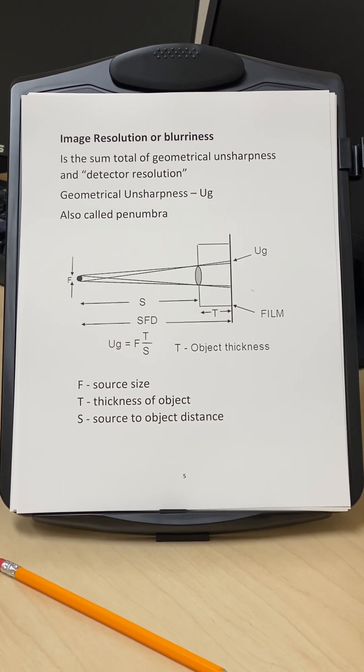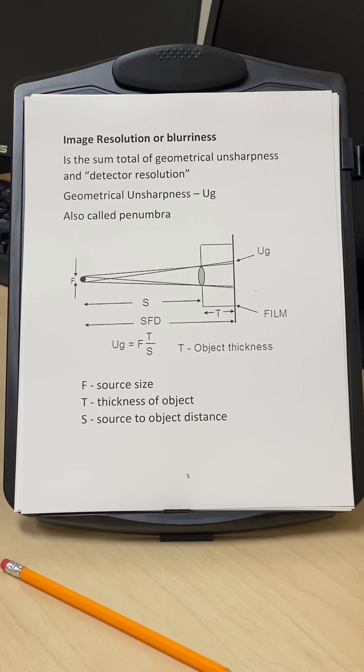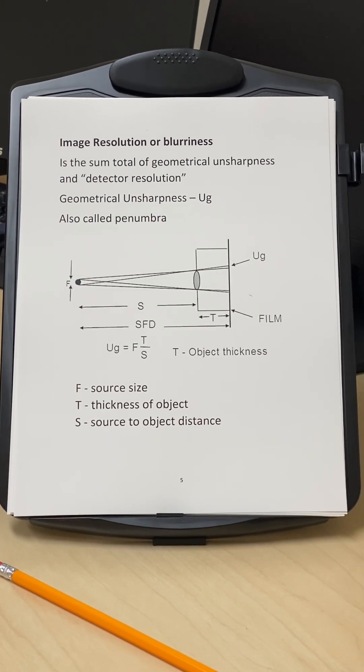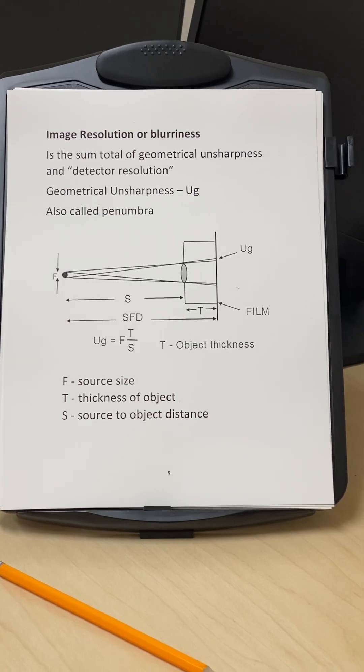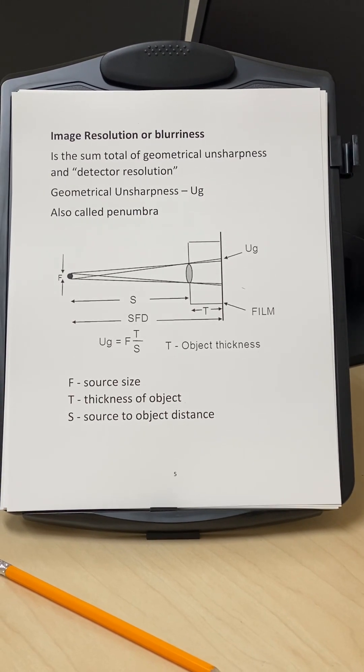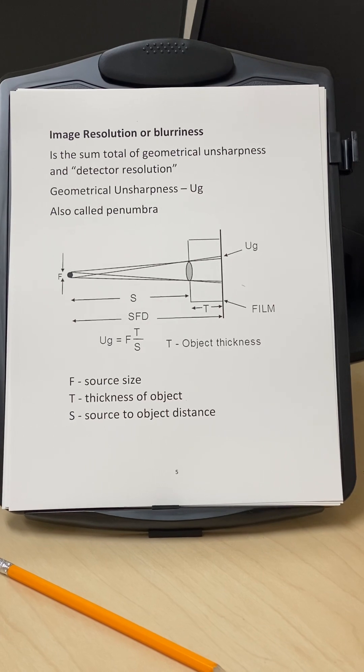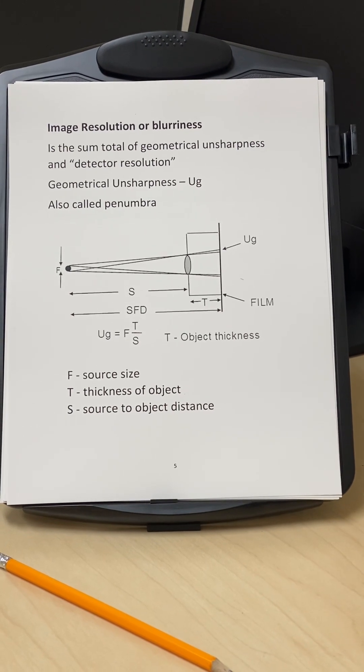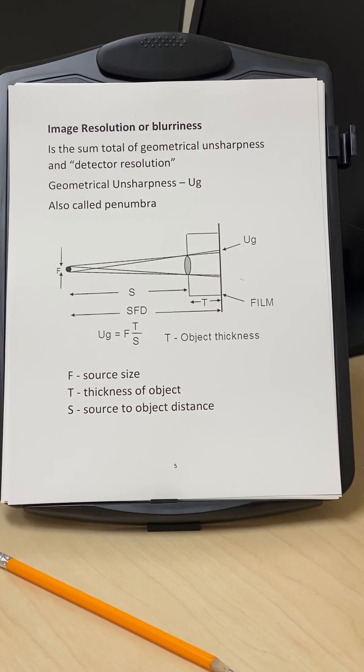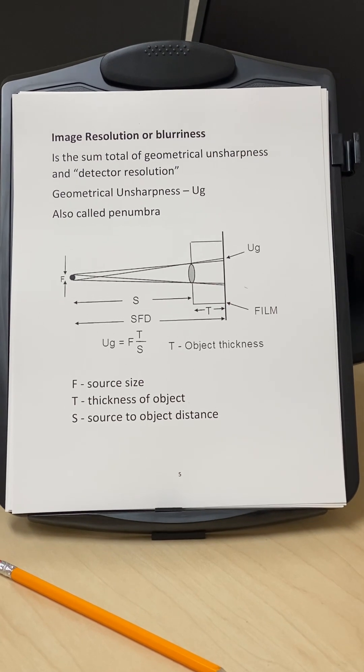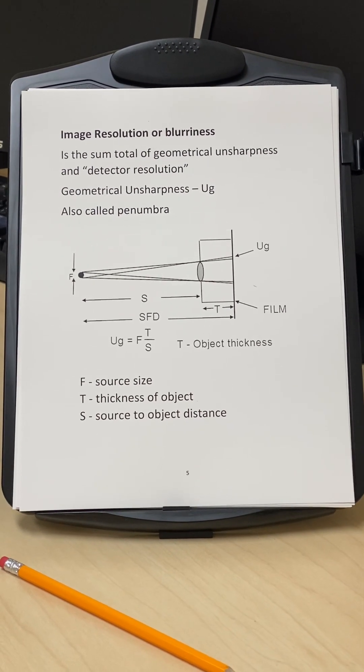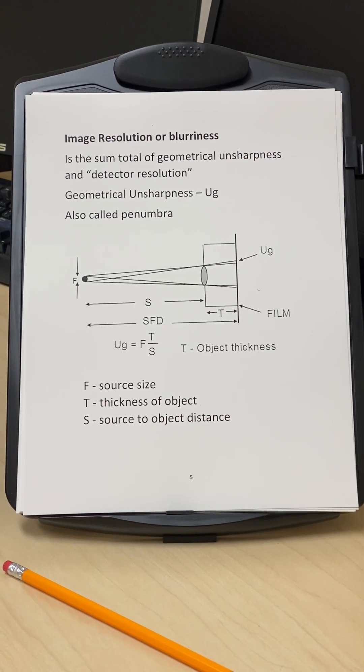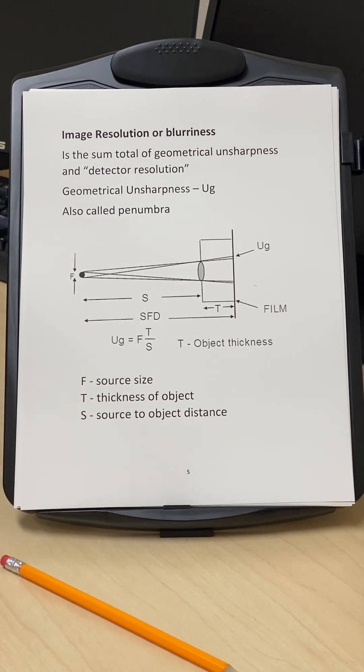So basically if the image of a crack or a small linear flaw, planar flaw is blurry, it could be misinterpreted as slag and get accepted. So it's very important that the indication be correctly characterized. So in that case, what plays a role is the image spatial resolution.